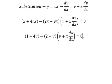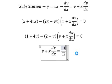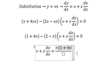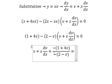So this one we put on the right and then we divide both sides with 2 minus v with the negative side. So you got negative 1 plus 4v divided by negative 2 minus v. We simplify the negative side.